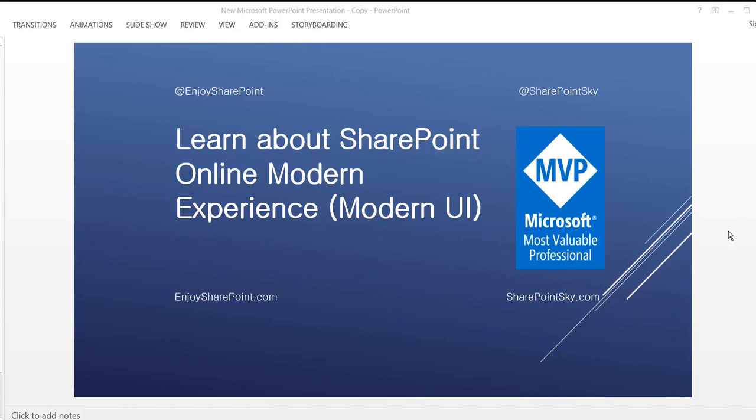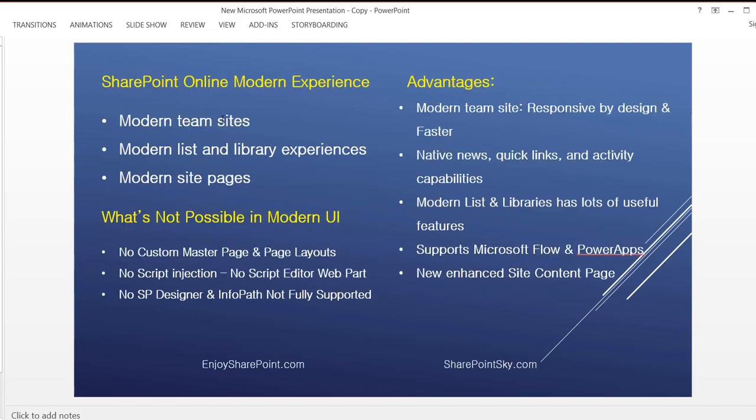The modern experience consists of the modern team site, modern list and library experience, and modern site pages. Remember, this version is available only on SharePoint Online, but now in the SharePoint 2019 version you will also be able to get these new features.